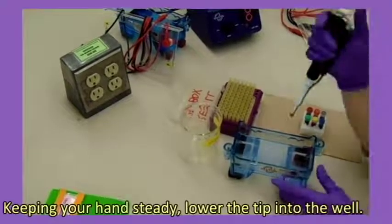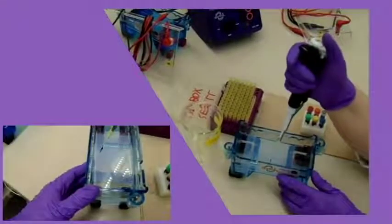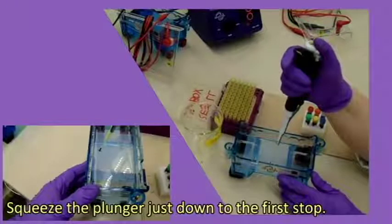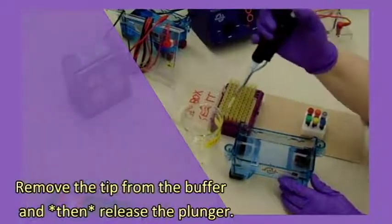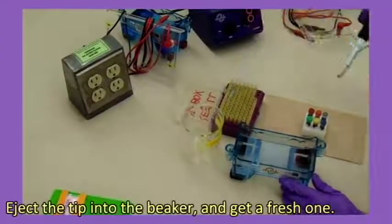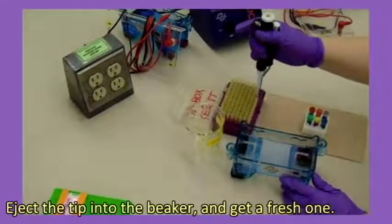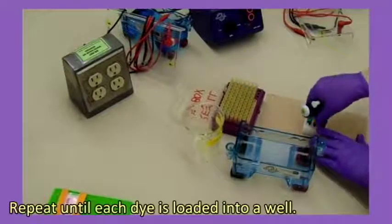Keeping your hands steady, lower the tip into the well. Squeeze the plunger just down to the first stop. Remove the tip from the buffer and then release the plunger. Eject the tip into the beaker and get a fresh one. Repeat until each dye is loaded into a well.